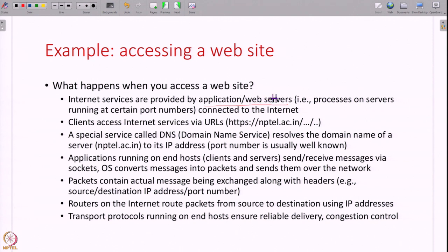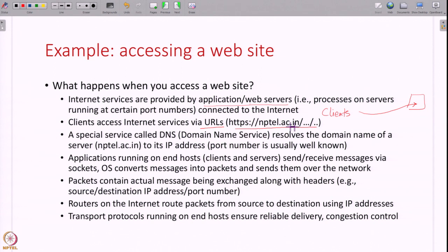Real world servers are much more complex, but the basic idea is the same. You have a process or a set of processes listening on one or more machines at certain port numbers. They have the content of the website, information about all the products being sold at an e-commerce site, or information about all reservations in a ticket booking portal. These servers have all the information, and clients — users of the computer system — access these servers over the internet using a URL. For example, if you want to access courses on NPTEL, you will type this address in the address bar of your browser. This is called the URL, and the clients will reach the content at the server.